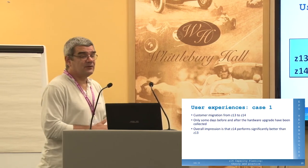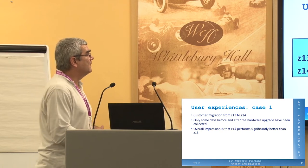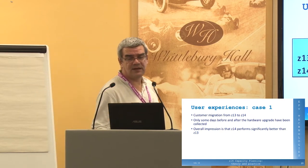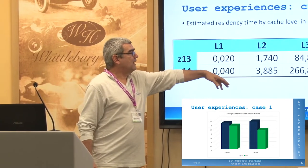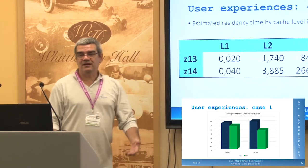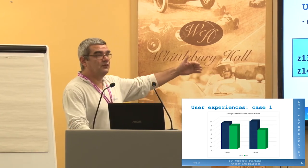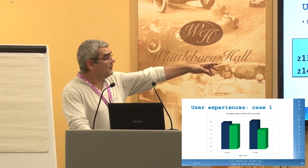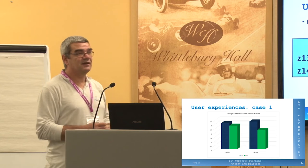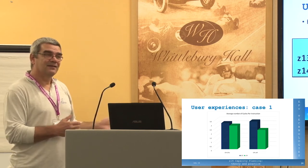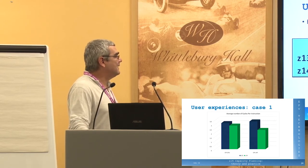The last slide for the first case shows the cache residency time we registered. For all levels of cache, data stayed longer — so the probability of finding what you're looking for is greater. The only level that is decreasing is level four, because the size of level four is not as large as before. This is nothing unexpected.